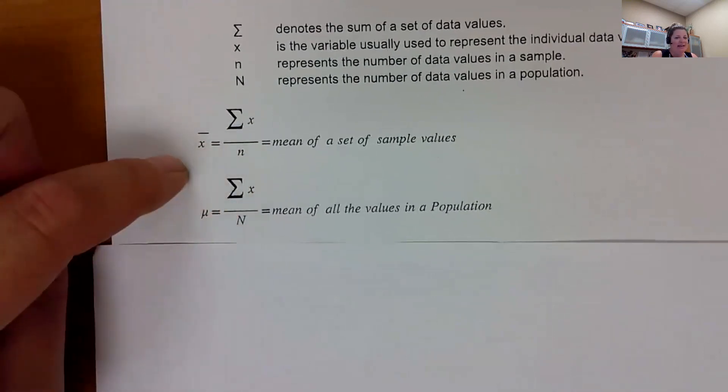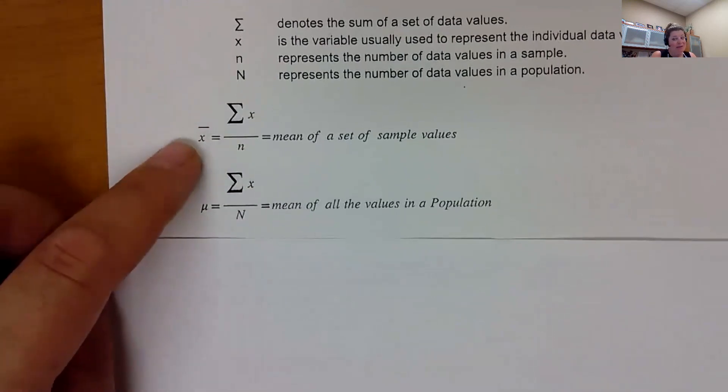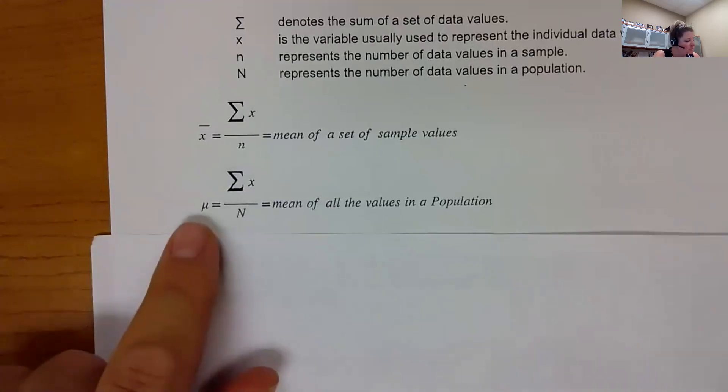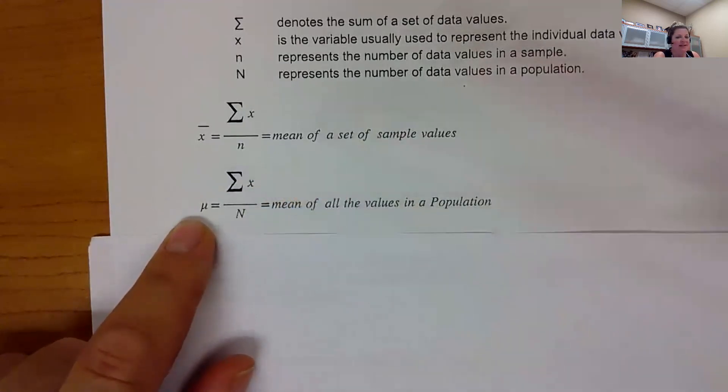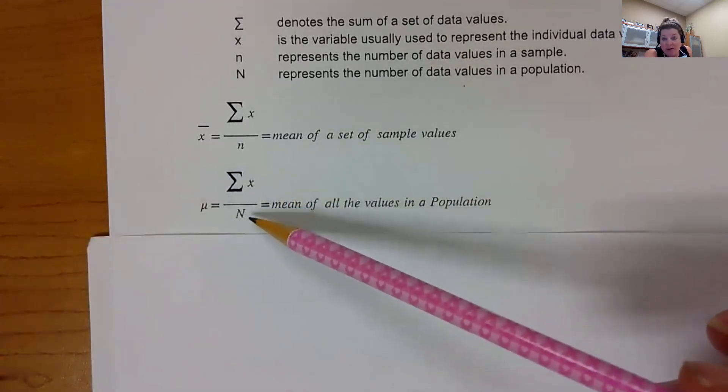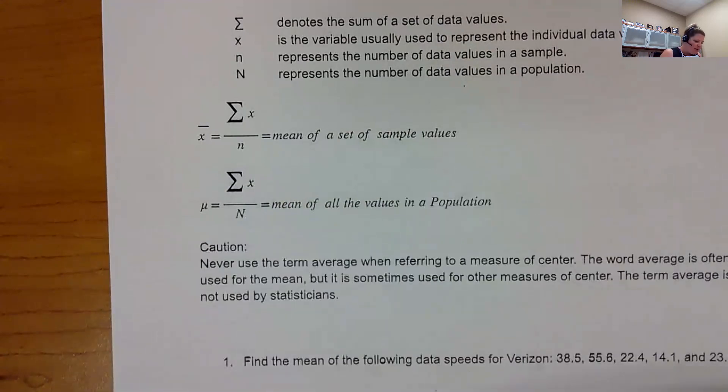So if I go to do the mean, I add up all my values and I divide by how many were in it. And this is the mean of a sample. X bar does mean mean, and you should see that on your graphing calculator, in Excel, in StatCrunch. This one also means mean, but that symbol means the mean of the entire population. That's symbols.